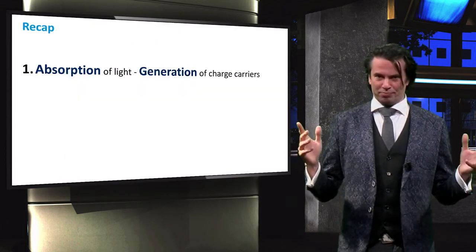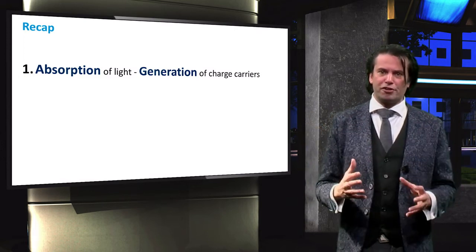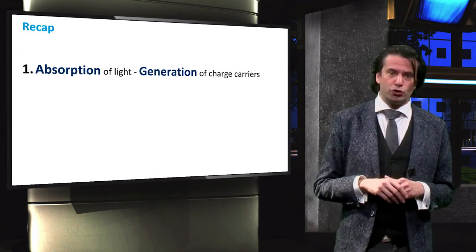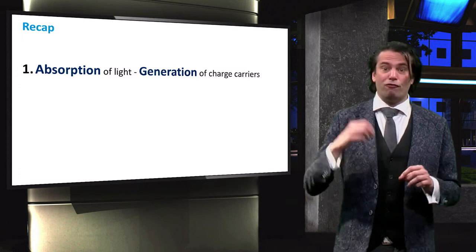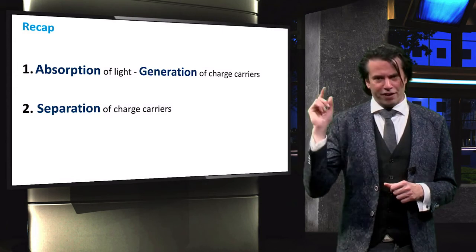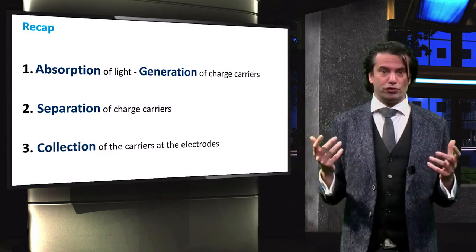In summary, we have seen how the photovoltaic effect involves the generation of charge carriers due to absorption of photons at a junction of two semiconductor materials, followed by the subsequent separation of the photo-generated charge carriers. And finally, the collection of the charge carriers at the terminals of the junction.